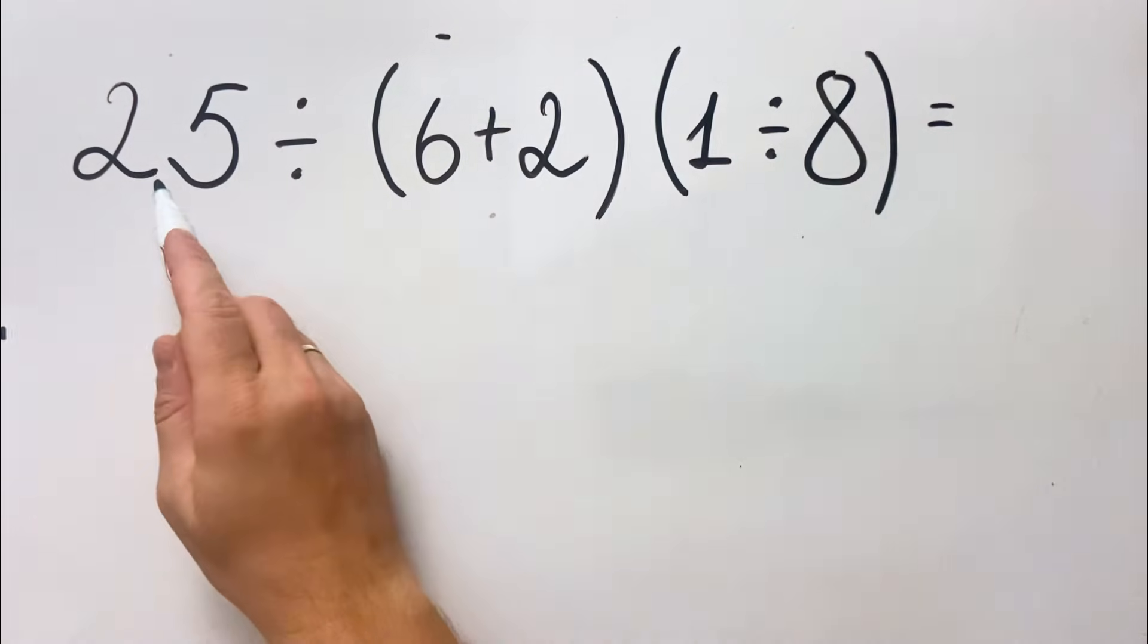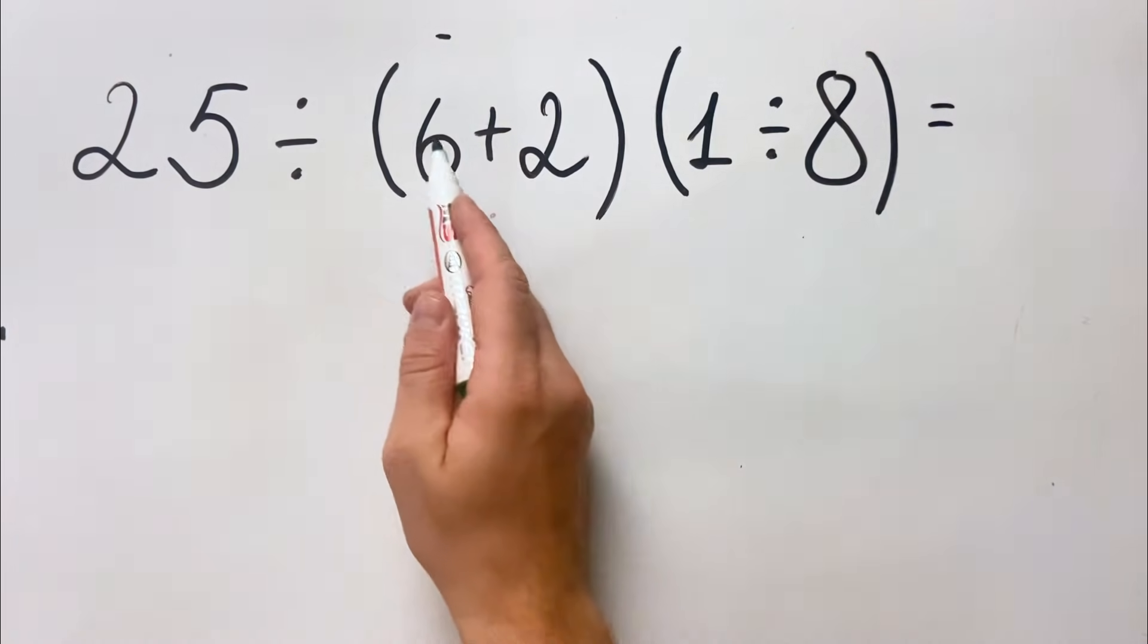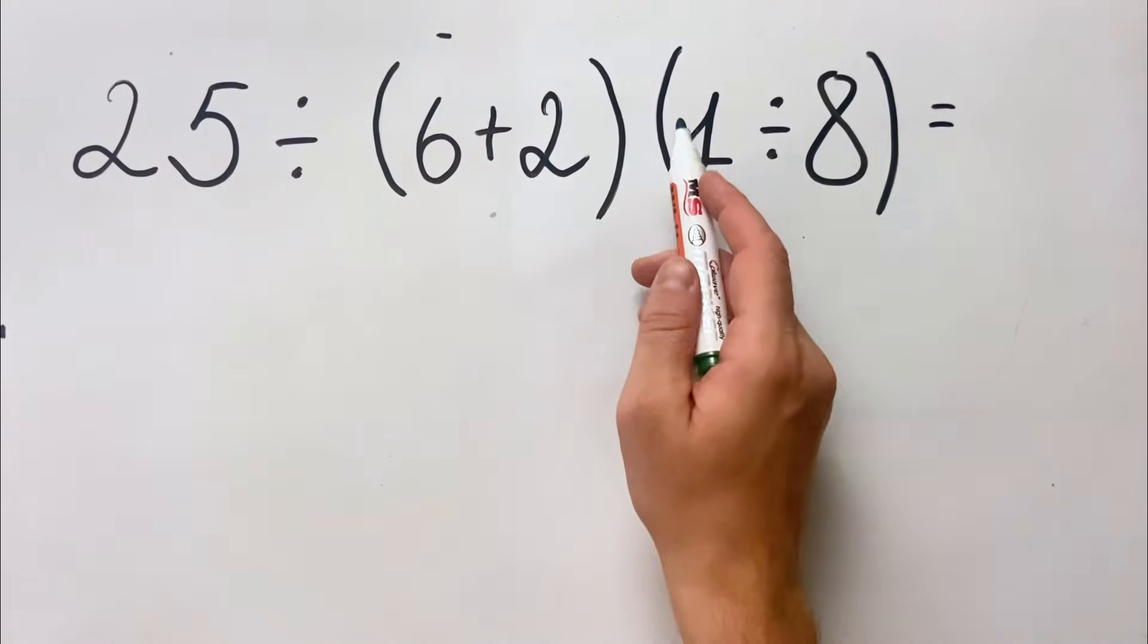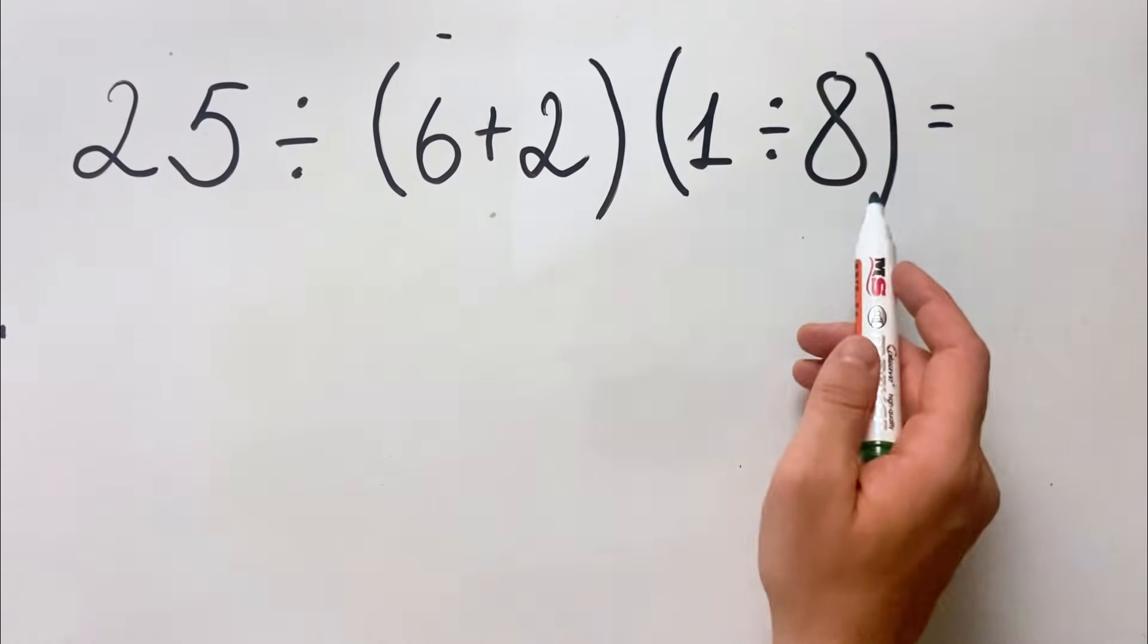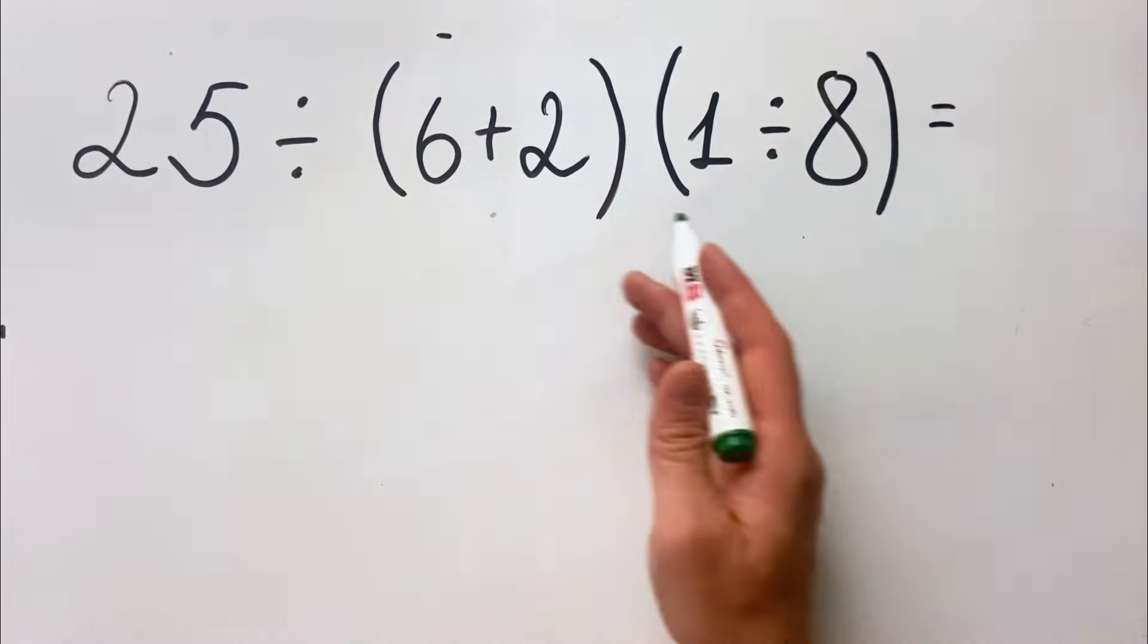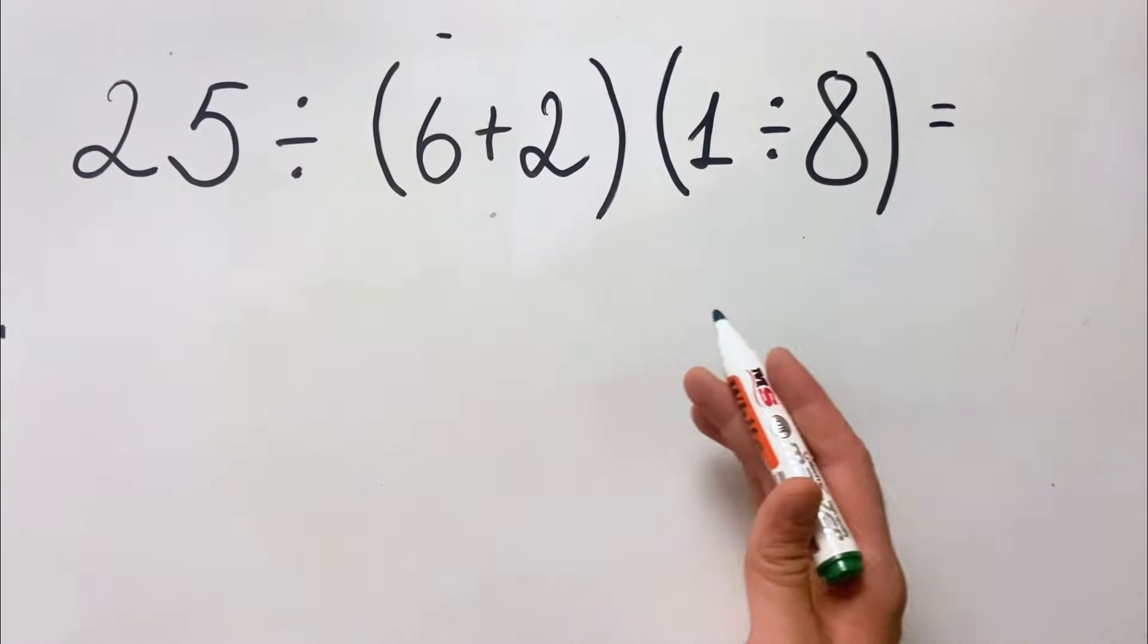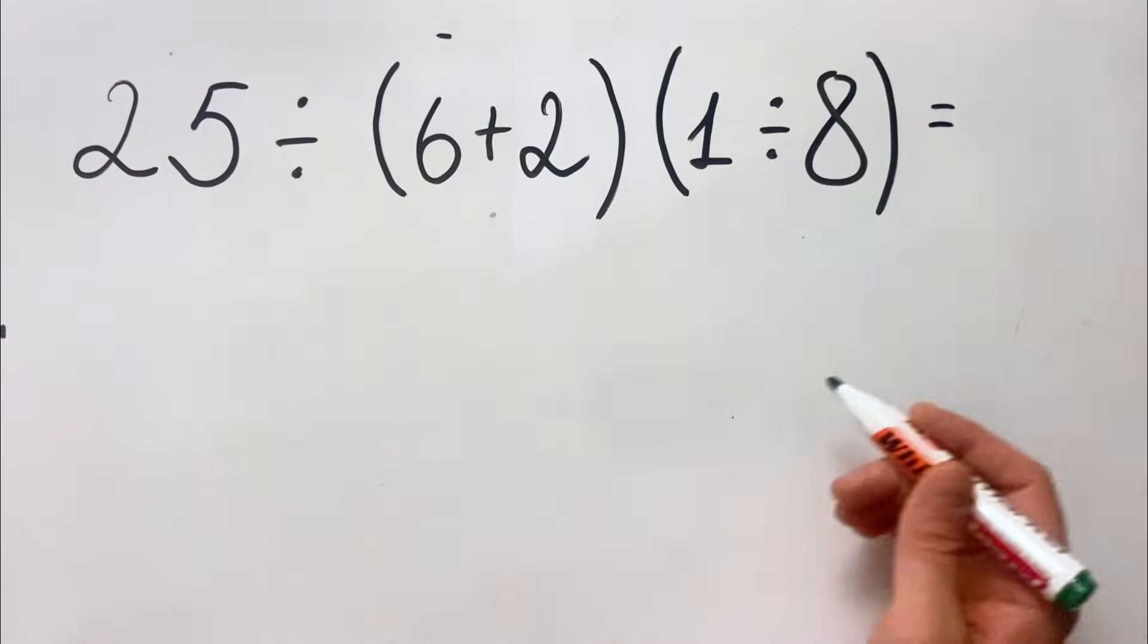Today we have this equation: 25 divided by 6 plus 2 in parentheses, next to 1 divided by 8 in parentheses. This is also an amazing example of how to practice the order of operations, so in this case we're going to use PEMDAS.